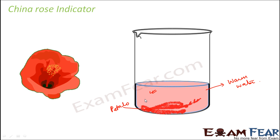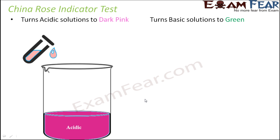Once you have the China Rose indicator solution, how do we perform the China Rose test? You take the China Rose solution — the reddish colored solution — and into that solution you put a few drops of an acidic solution.